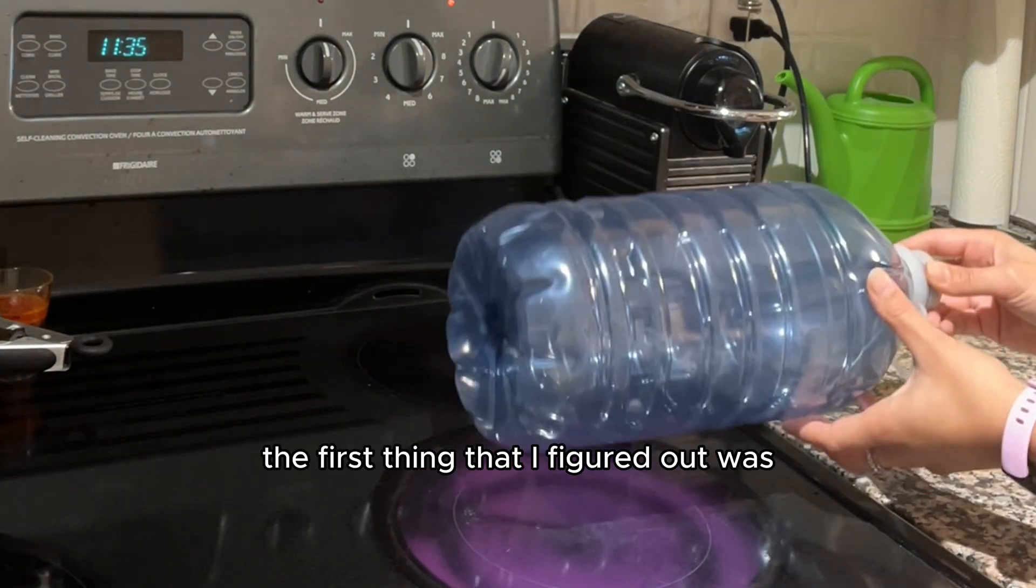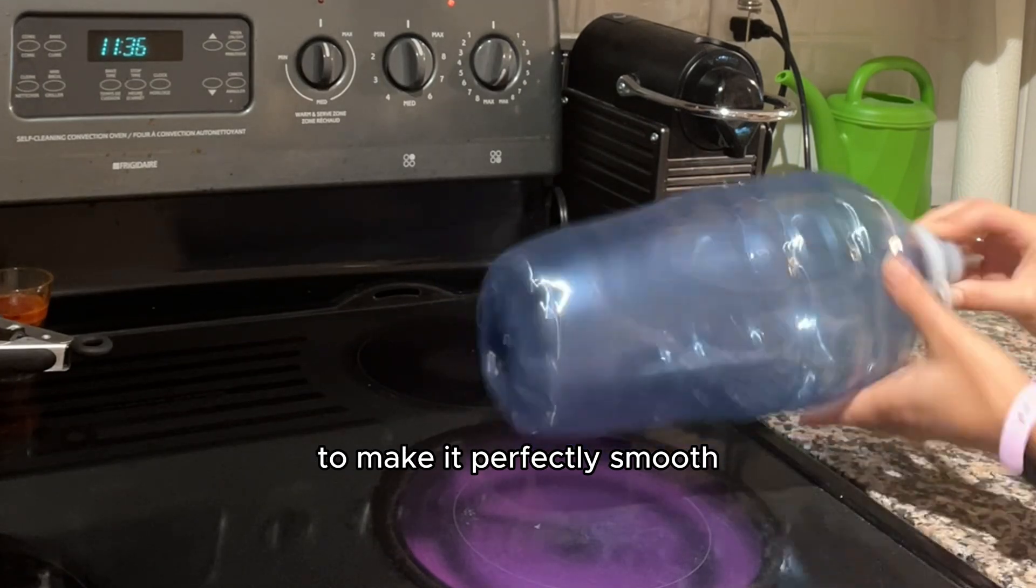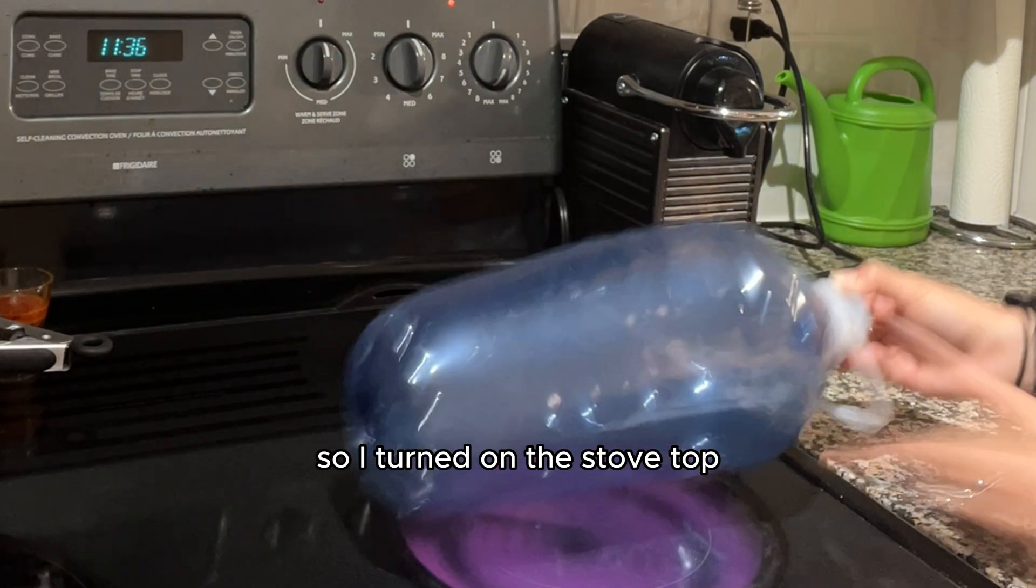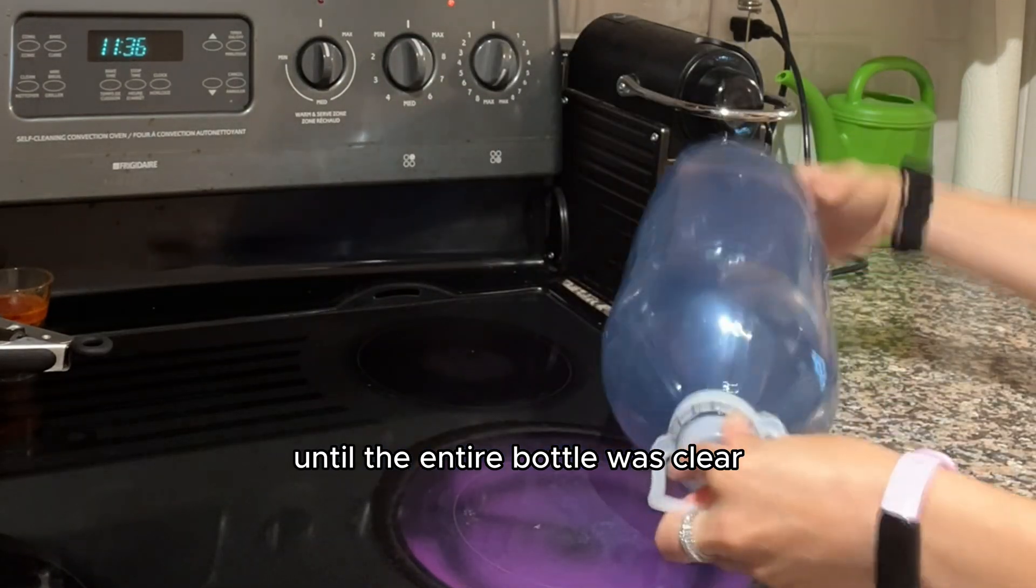The first thing that I figured out was I needed to melt off the lines on the bottle to make it perfectly smooth. So I turned on the stovetop and held the bottle just above the heat until the entire bottle was clear. No lines.